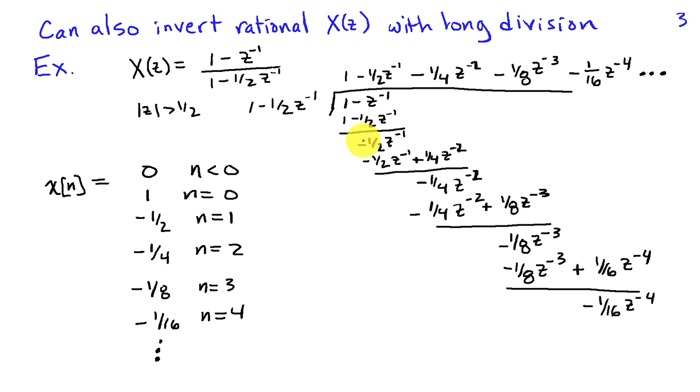When I multiply by 1, I'm going to subtract and end up with minus 1 half Z inverse. Well, to cancel this term out, I need to multiply 1 over here by minus 1 half Z inverse. And then when I subtract again, I'm left with minus 1 quarter Z to the minus 2.